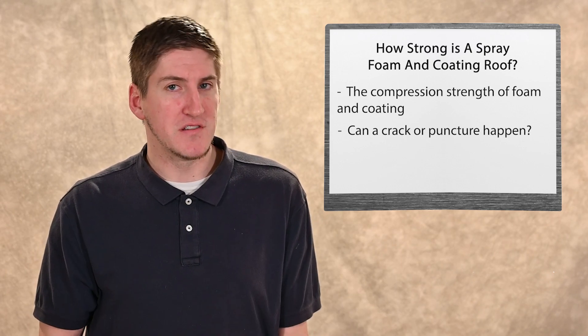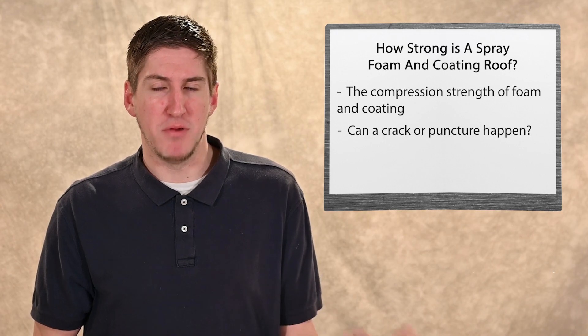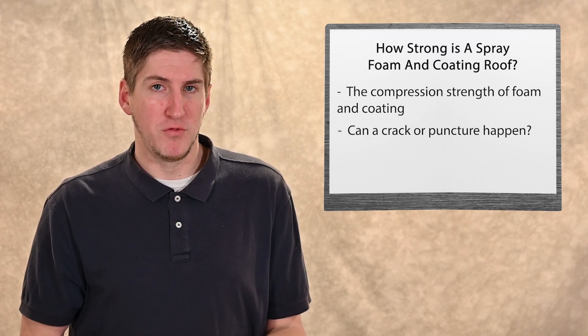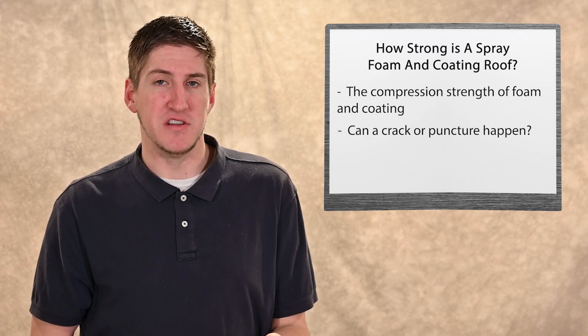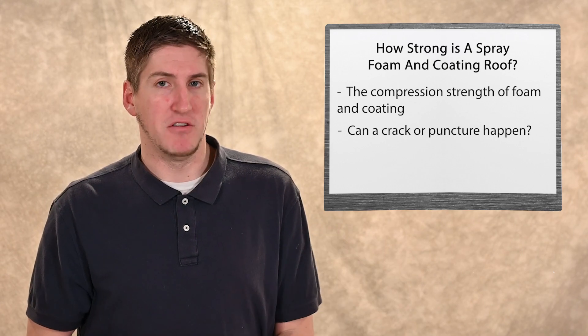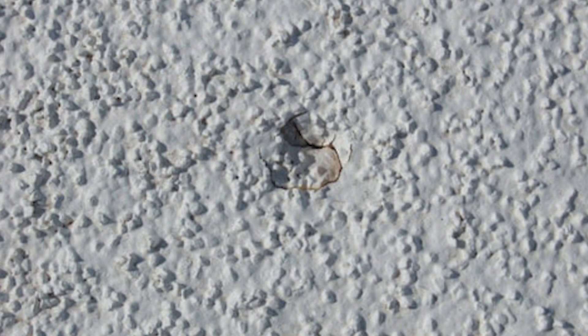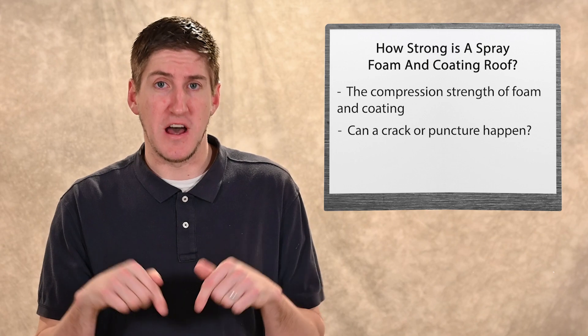But every roofing system out there, maybe besides metal, can get cracks or punctures. But what's good about a foam roof is that it has closed cell properties. So, say there's hail damage, and it cracks a couple parts of the roof, and it rains the next day. Well, rain will just sit in that crack or puncture, and it won't move. It won't travel further into the roof.